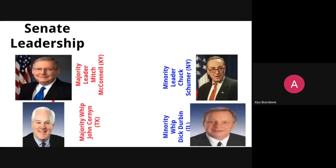The real power in the Senate lies with the majority and minority leaders and whips. The current majority leader of the United States Senate is Mitch McConnell of Kentucky, and the majority whip is John Cornyn of Texas. The minority leader is Chuck Schumer of New York, and the minority whip is Dick Durbin of Illinois. Whereas Chuck Grassley's position is largely symbolic, Mitch McConnell is probably the most powerful U.S. Senator currently as majority leader.